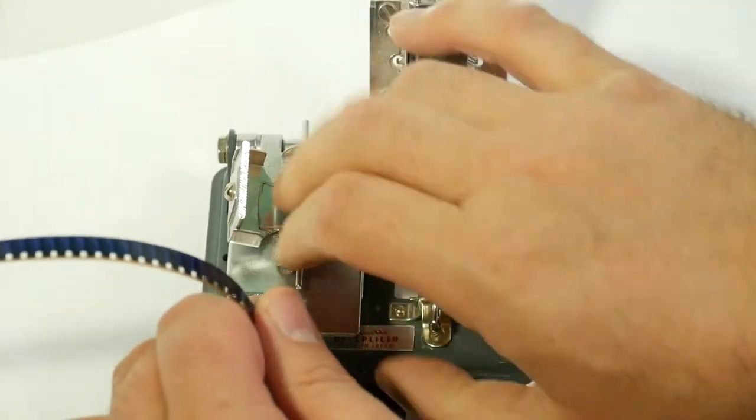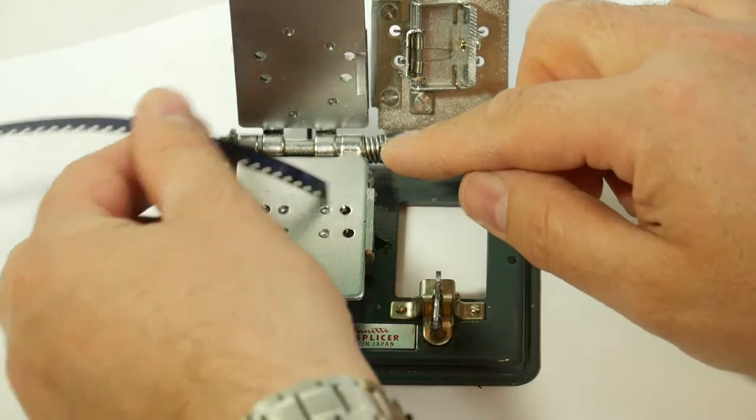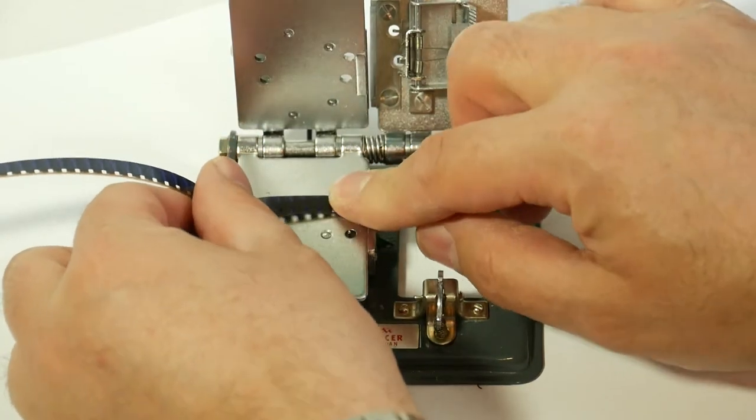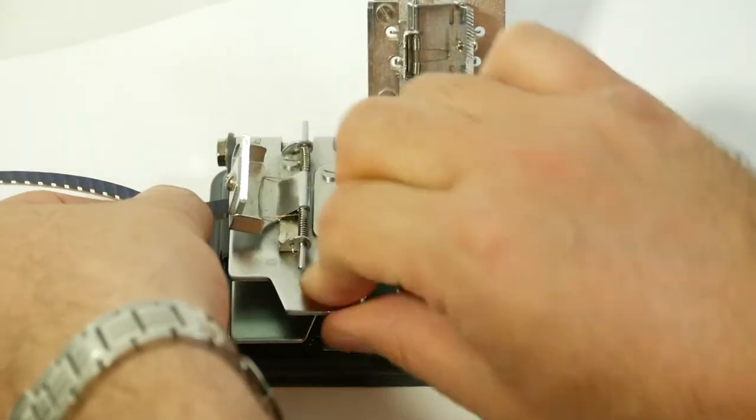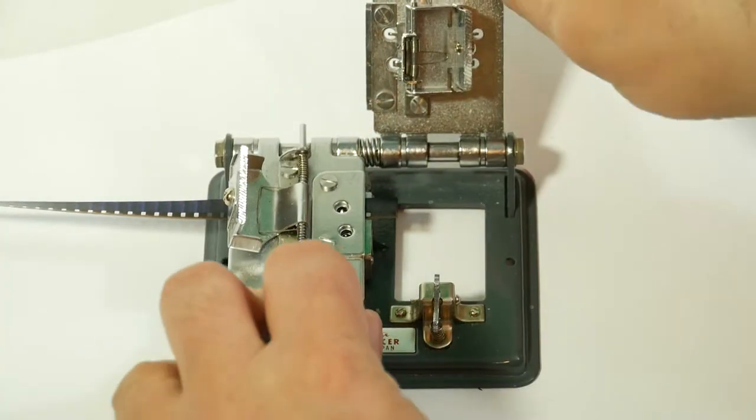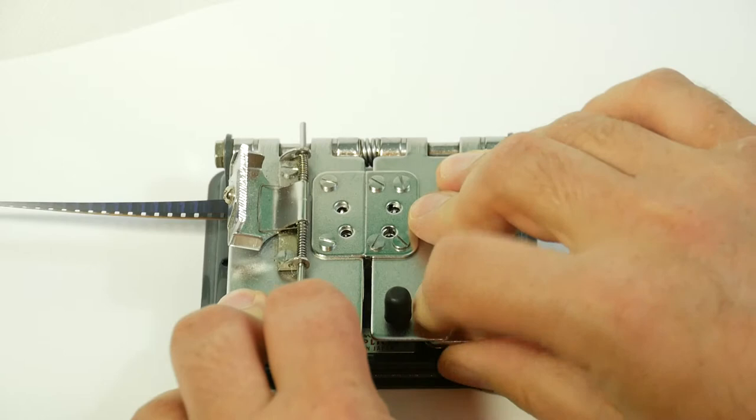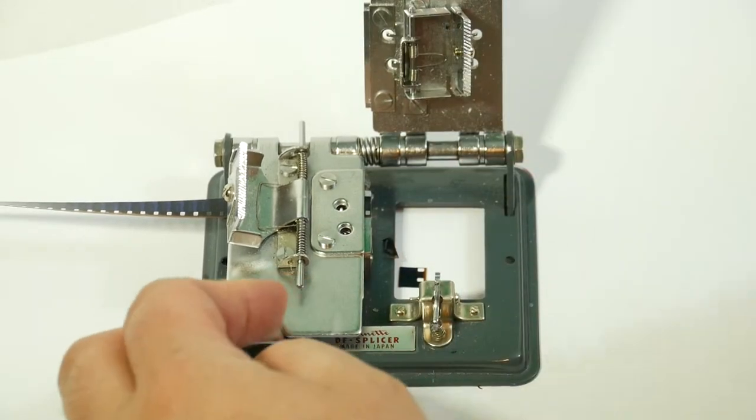Lift the plates up, pop the film over the pins like so, bring down the plate and trim the film. Okay that's the first piece of film trimmed.